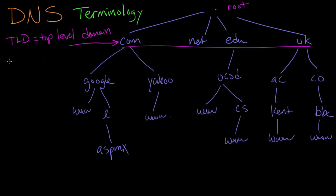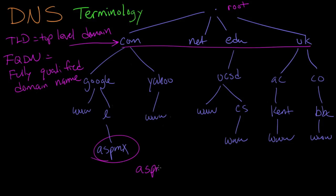Another term is FQDN, which stands for Fully Qualified Domain Name. And a fully qualified domain name is one that's completely spelled out. Like, let's take this point right here, this one down here, this ASPMX. Its fully qualified domain name is ASPMX.L.Google.com. And this last dot here comes from the root of the DNS hierarchy.